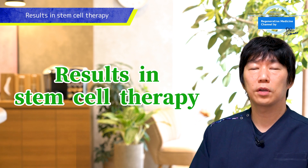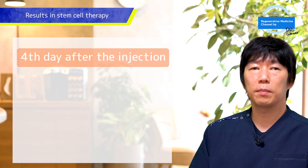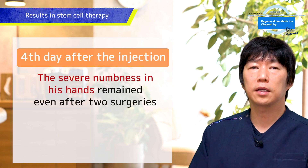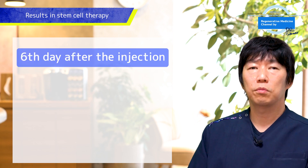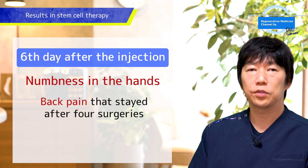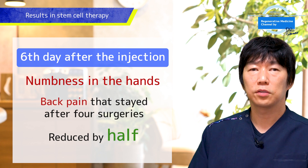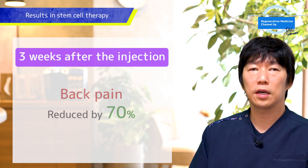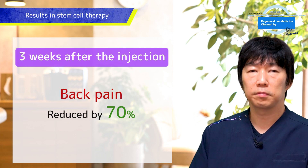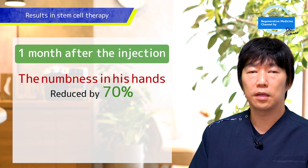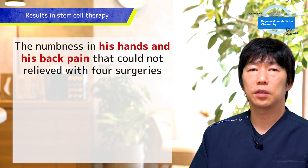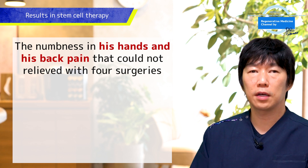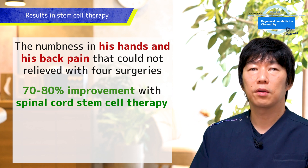He then came to us for spinal cord stem cell injections. After the fourth day of treatment, the severe numbness in his hands that had remained after two surgeries was reduced by as much as 30%. On the sixth day, the numbness in his hands was reduced by half and the back pain was also reduced by half. Three weeks after the injection, his back pain was reduced by 70%. In one month, the numbness in his hands was reduced by 70% and back pain by 80%. The numbness and back pain that could not be relieved with surgeries showed amazing improvement by the spinal cord stem cell therapy.